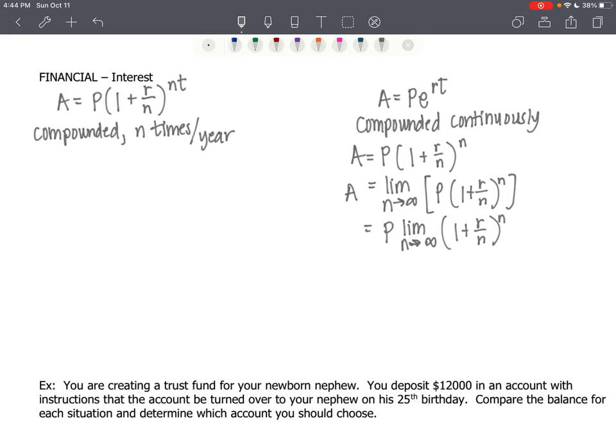And now I just have 1 plus R over N raised to the Nth power. And then what I'm going to do is I'm going to take that Nth power, and I'm going to divide by R, but I'm going to raise it to the R power. And that's going to make it unchanged, because a power to a power you multiply. N over R times R is still N. So I haven't changed it.